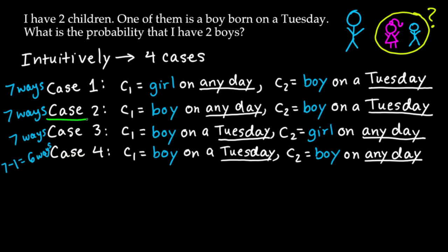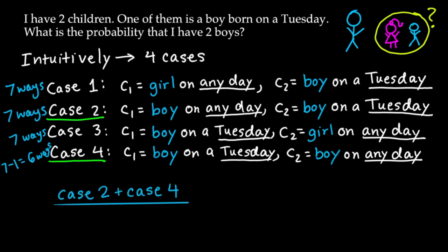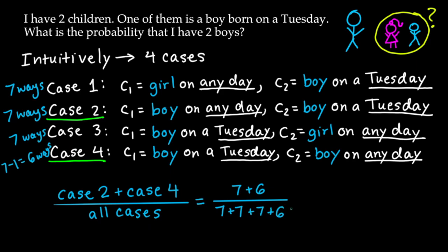We're only concerned with cases two and four — those are the cases where I have two boys. That gives 7 + 6 = 13 favorable outcomes, divided by the total 7 + 7 + 7 + 6 = 27 outcomes. So the probability that I have two boys is 13/27.